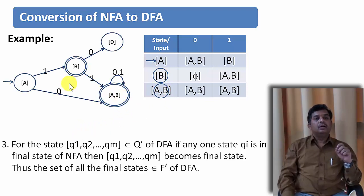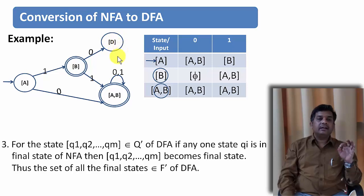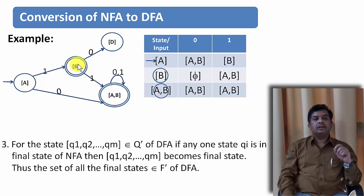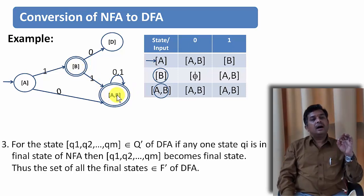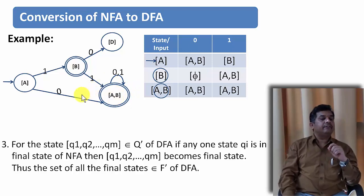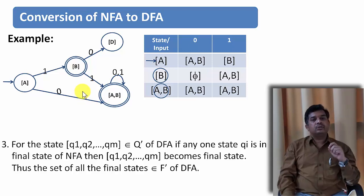If you want to draw the corresponding DFA, it will look like this. The dead state is shown — from there we can never come back to a final state. We start with A: on input 1 it goes to B, on input 0 it goes to AB. On AB, both input 0 and 1 go to AB. On state B, input 0 goes to the dead state, and input 1 goes to AB. States B and AB are double-circled to indicate they are final states.